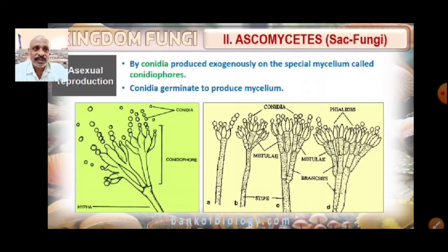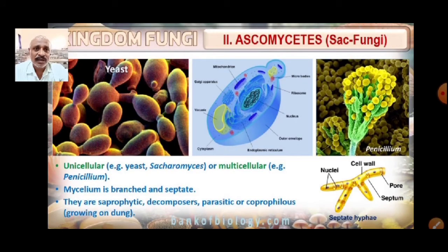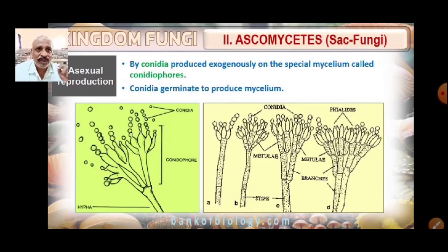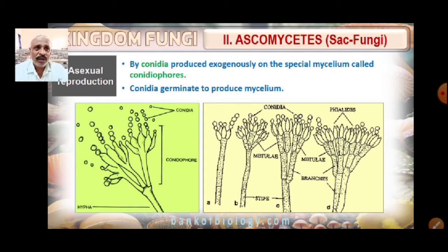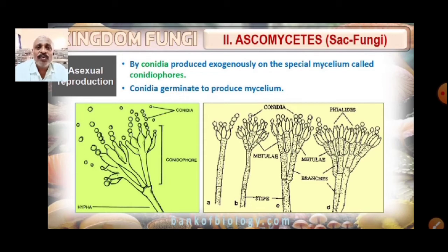The mycelium is septate. Asexual reproduction occurs by the formation of conidia. Conidia are produced exogenously — that means outside the body — on special mycelium called conidiophores, which have a brush-like structure. Each conidium is going to germinate into a new organism.